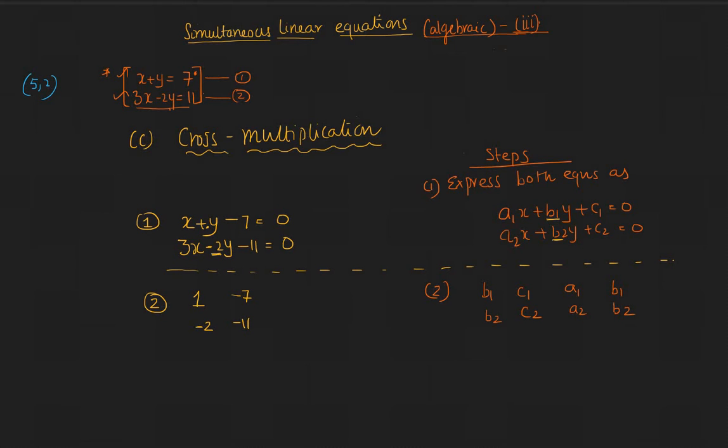Then your a1 a2 would be 1, 3, and again your b1 b2 would be 1 minus 2. So we are done with the second step.